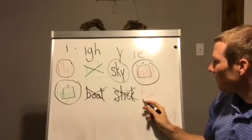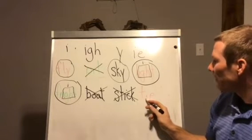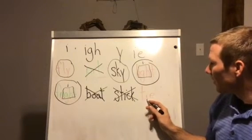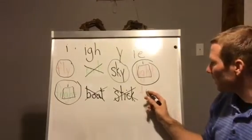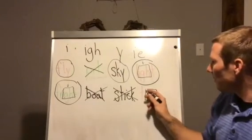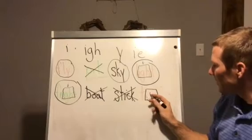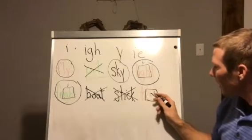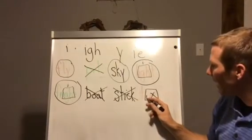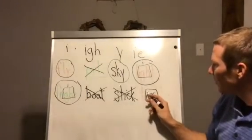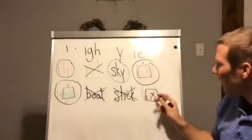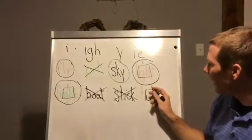Let's go to this last word. I look for my vowel, but wait — I see two vowels walking, and the first one's going to do the talking. So this E is quiet and the I is going to say I. My word is T-IE, tie.